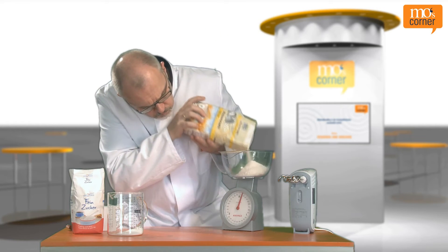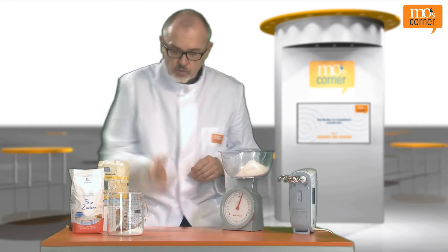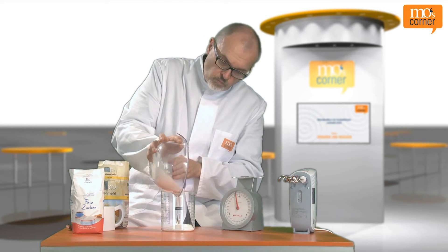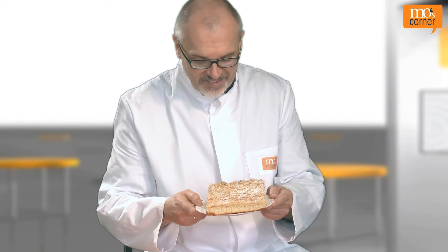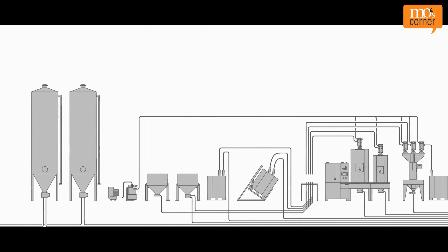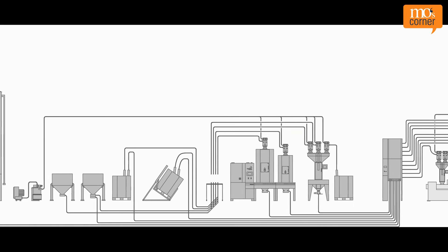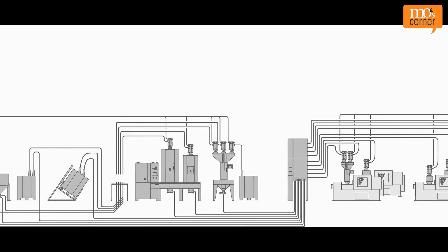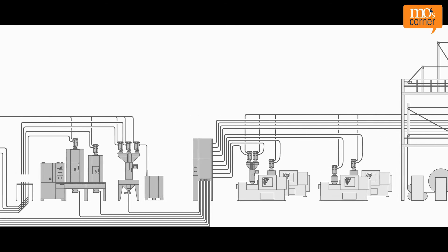It's exactly the same in the plastics industry. Without precise dosing, nothing is possible. Dosing is the process where one or more components are brought together in certain proportions. In the process chain, dosing is usually before mixing, where the materials are mixed as optimally as possible before extrusion.